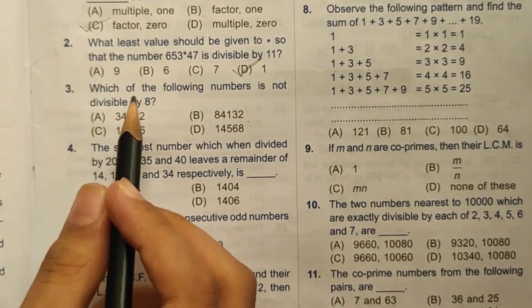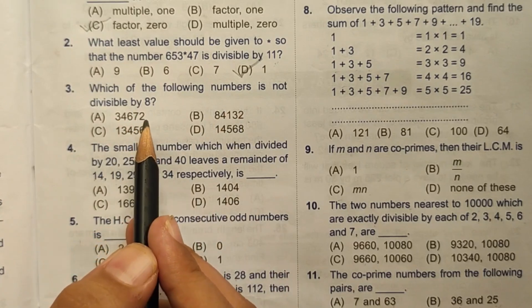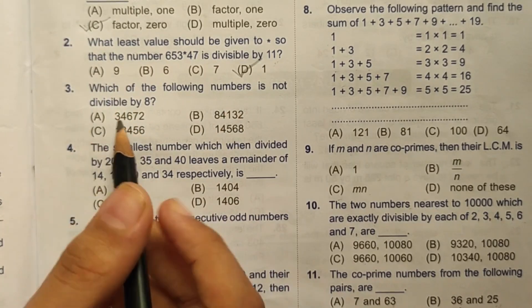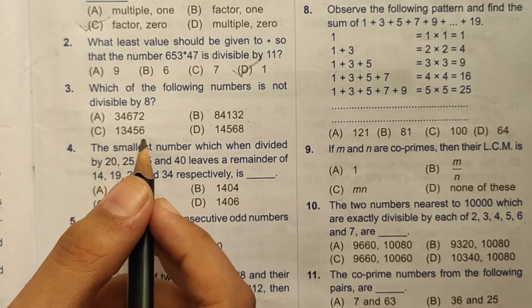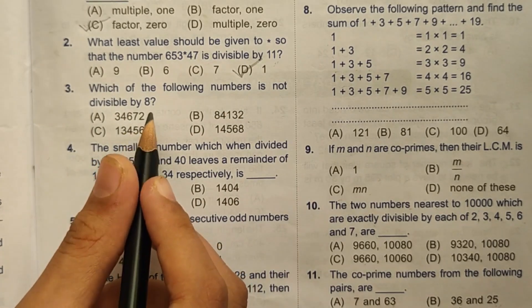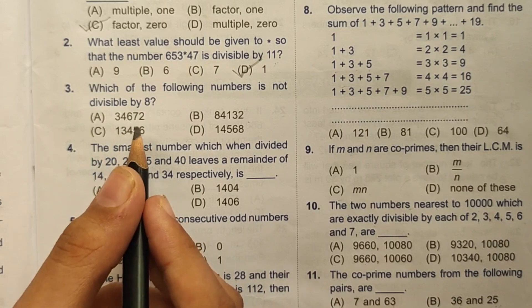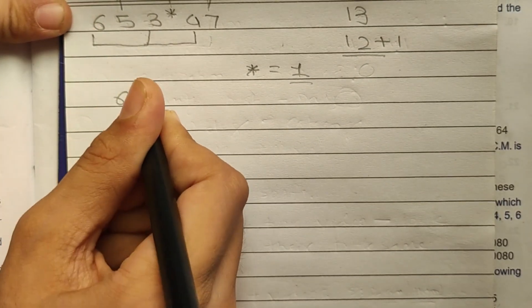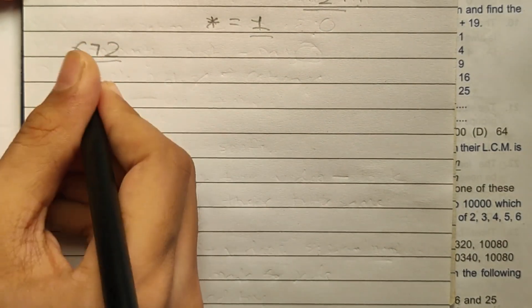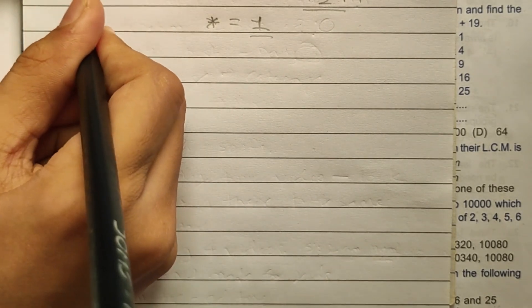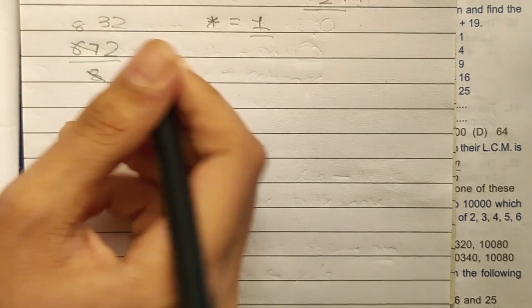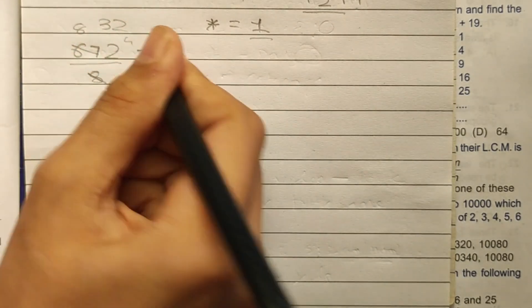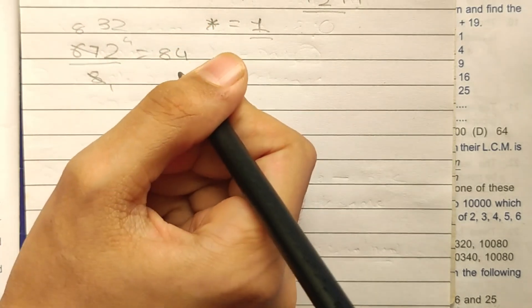Third question: which of the following numbers is not divisible by 8? The divisibility rule of 8 is that the last three digits should be divisible by 8. For option A: 34,672 — the last three digits are 672. Dividing 672 by 8 gives 84, so it is divisible by 8.